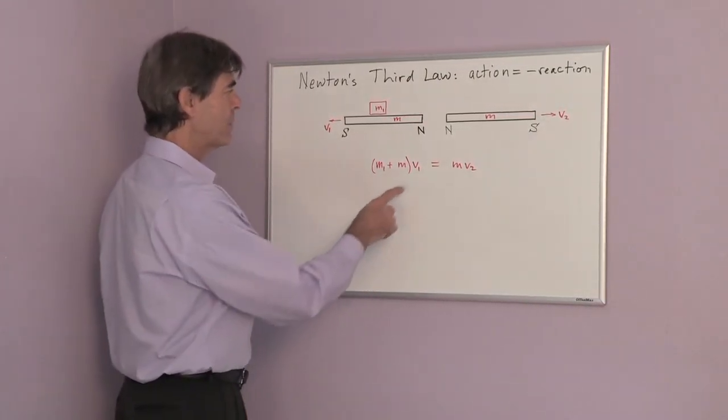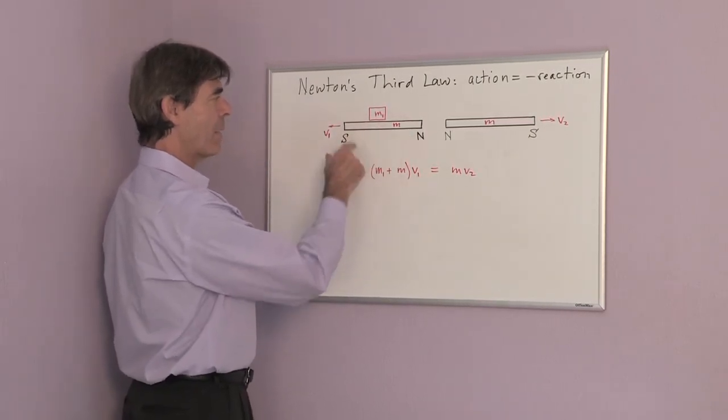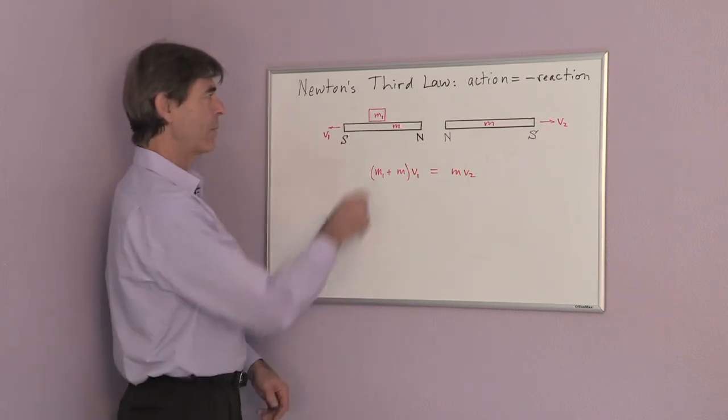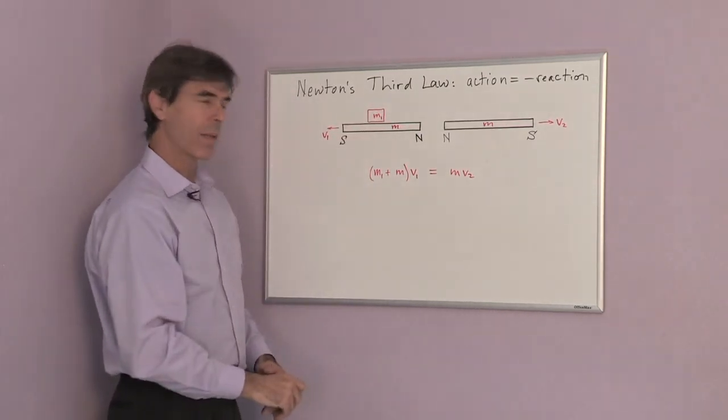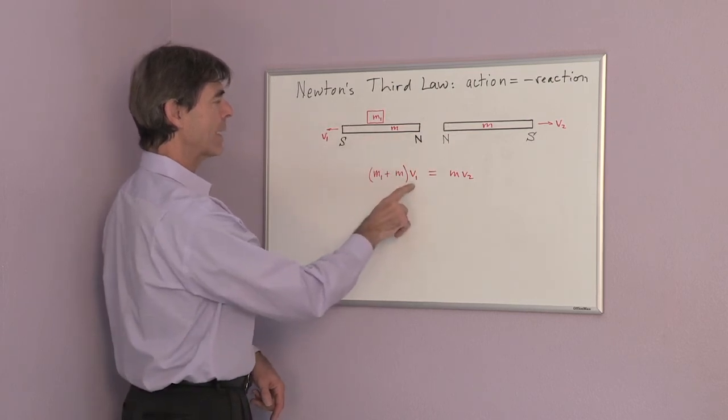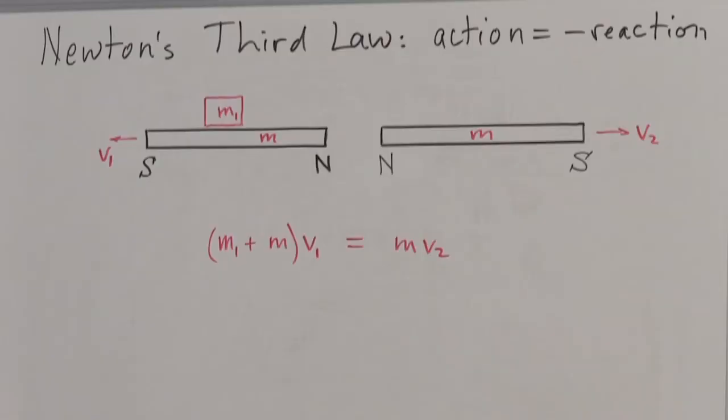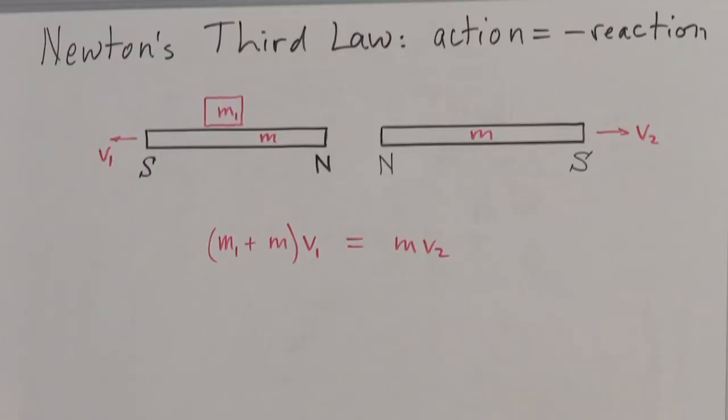And the speed that the magnets move depends on the masses of the magnets. So we could put maybe a small mass on one of the magnets, and we'll see that the one magnet will move apart at a slower speed than the other magnet if we have more mass on it.